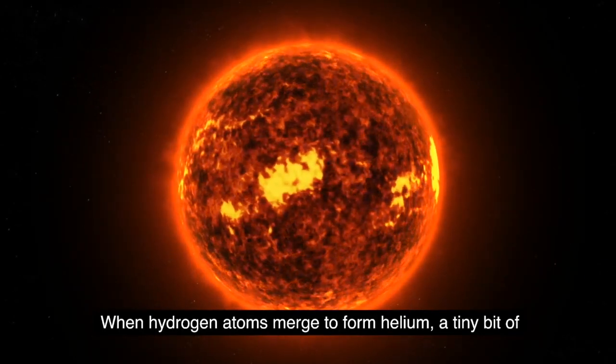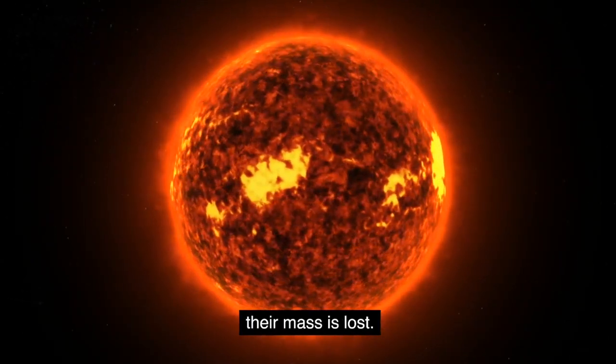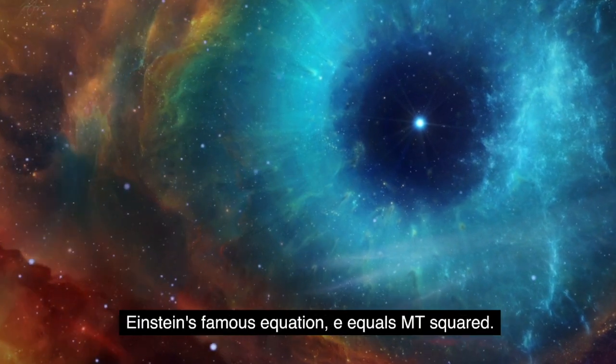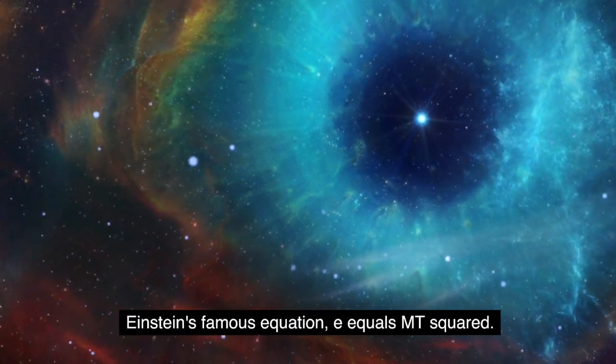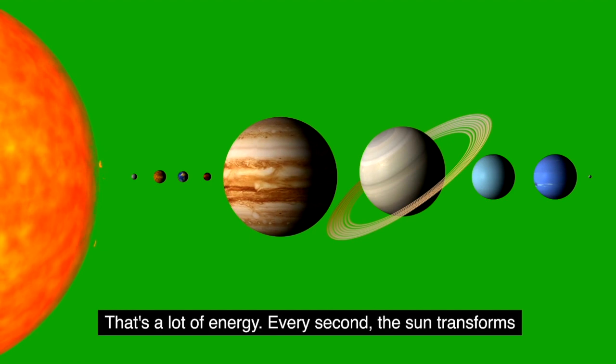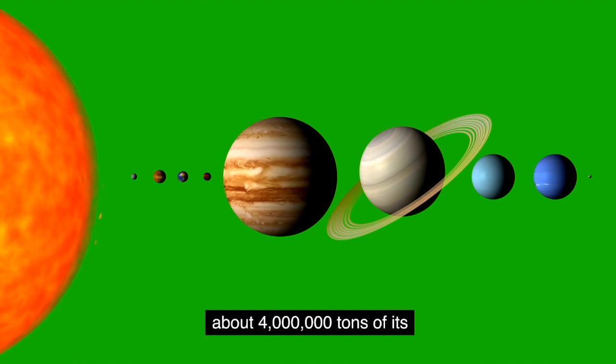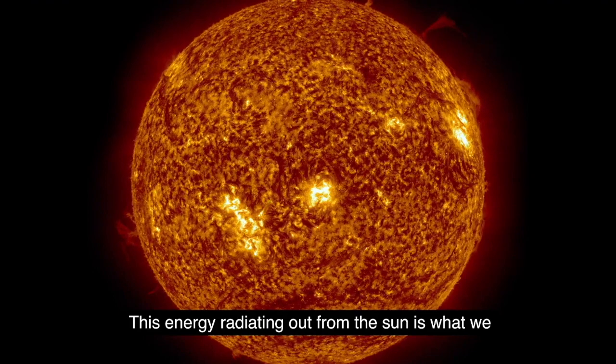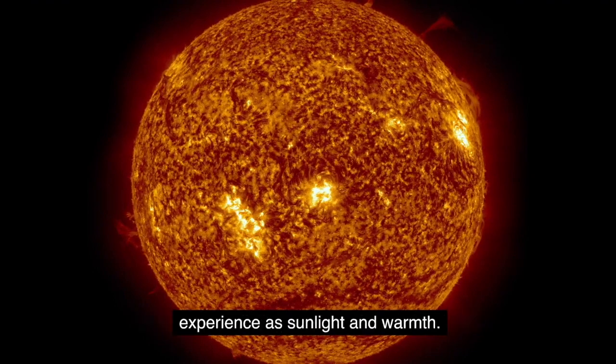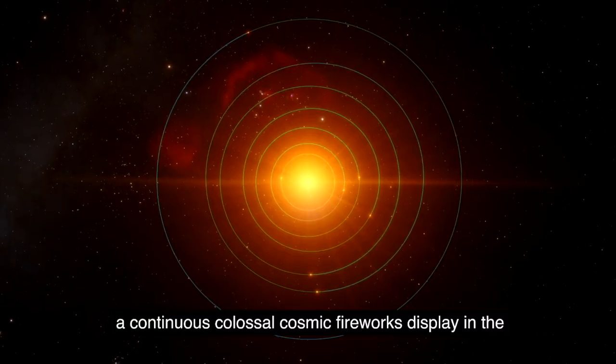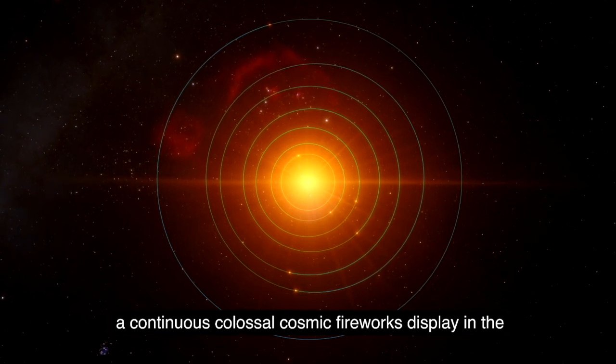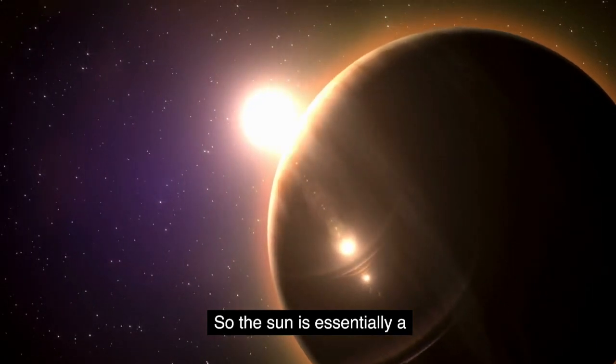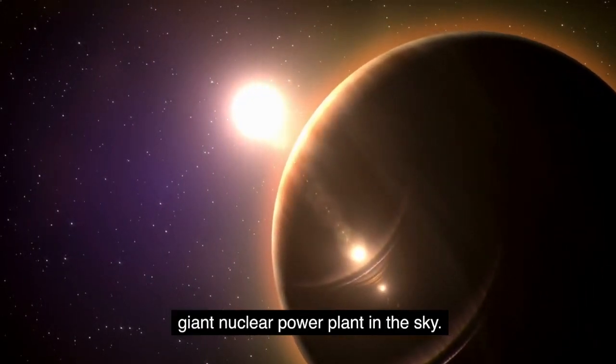When hydrogen atoms merge to form helium, a tiny bit of their mass is lost. This lost mass is converted into energy according to Einstein's famous equation, E equals mc squared. That's a lot of energy. Every second the sun transforms about 4 million tons of its own matter into heat and light. This energy, radiating out from the sun, is what we experience as sunlight and warmth. A continuous, colossal cosmic fireworks display in the heart of our solar system. So, the sun is essentially a giant nuclear power plant in the sky.